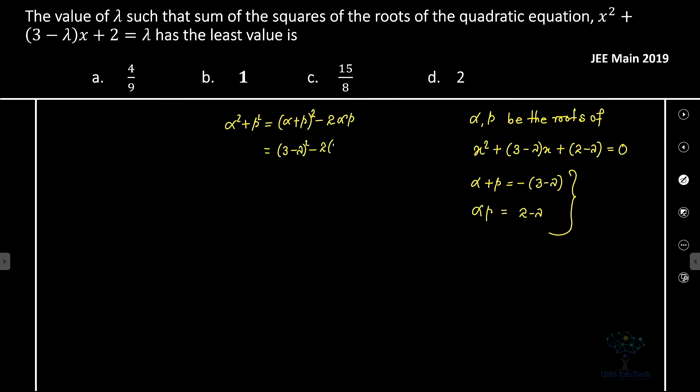Which implies it is 9 plus lambda squared minus 6 lambda minus 4 plus 2 lambda, which implies it's equal to lambda squared minus 4 lambda plus 5.